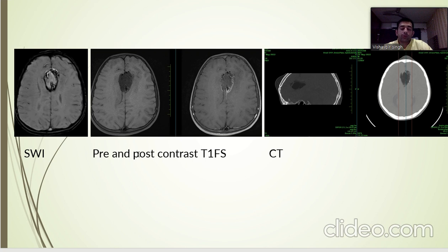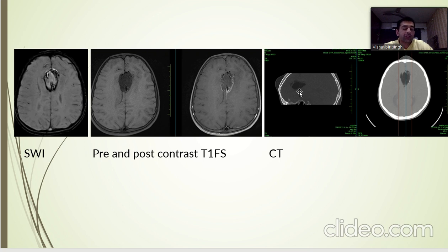The same lesion on SWI shows peripheral signal dropout. On pre- and post-contrast there is no enhancement, and on CT imaging we see that the lesion is hypodense corresponding to the low CT attenuation value of fat.